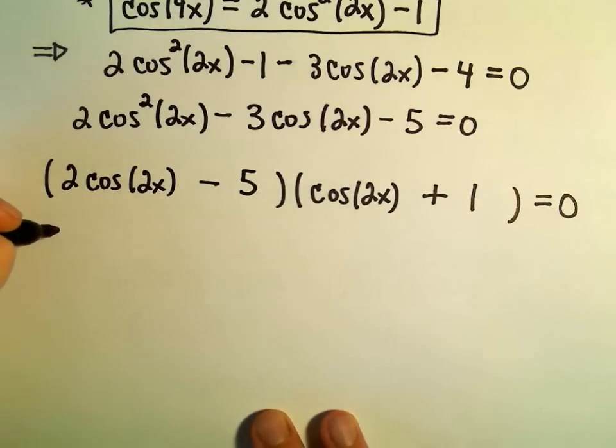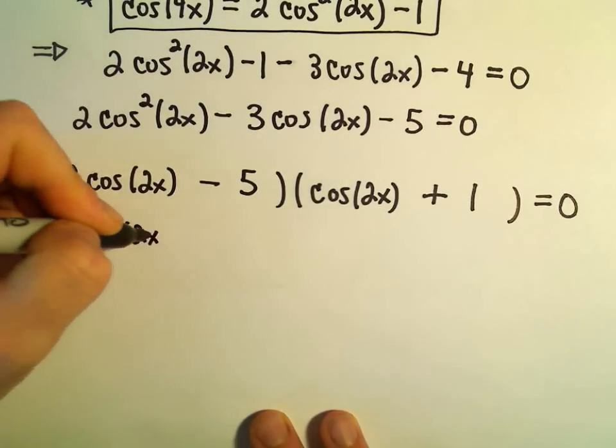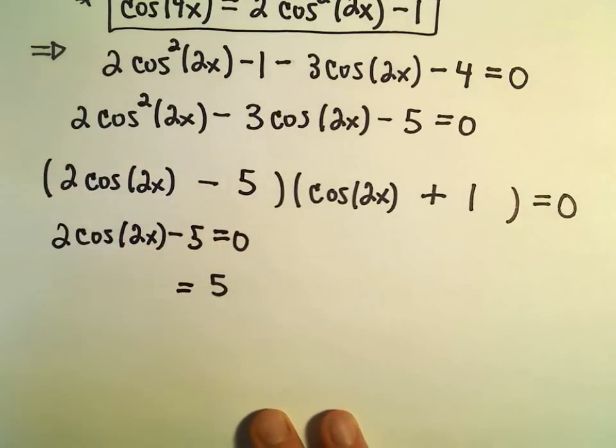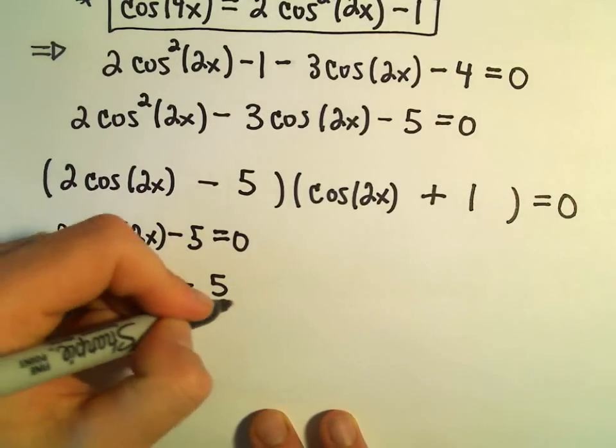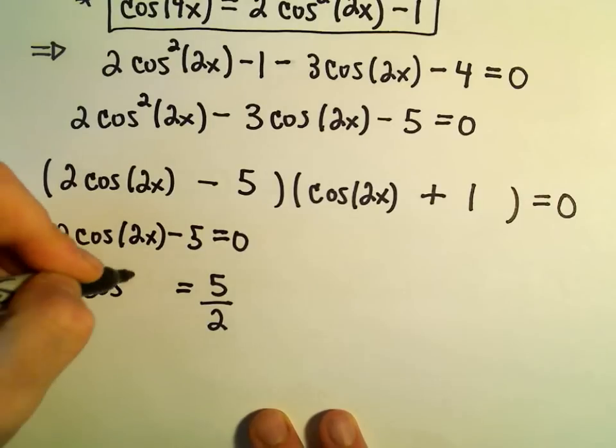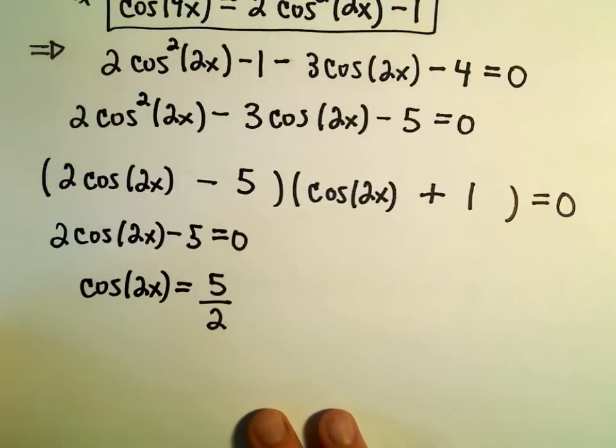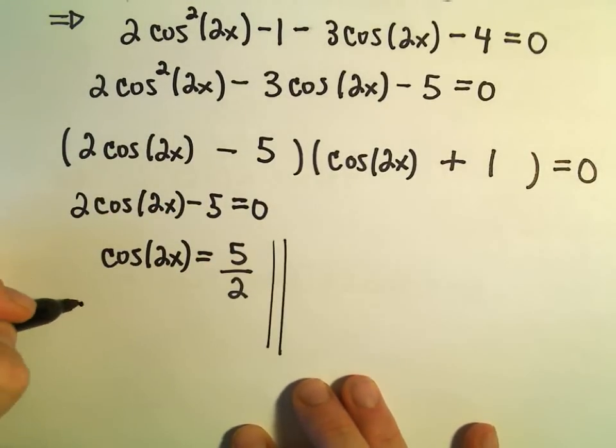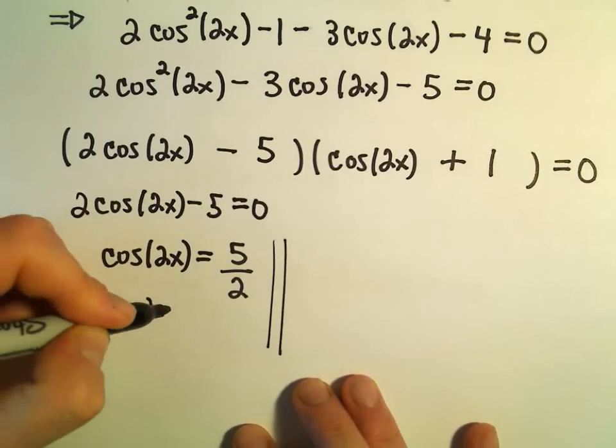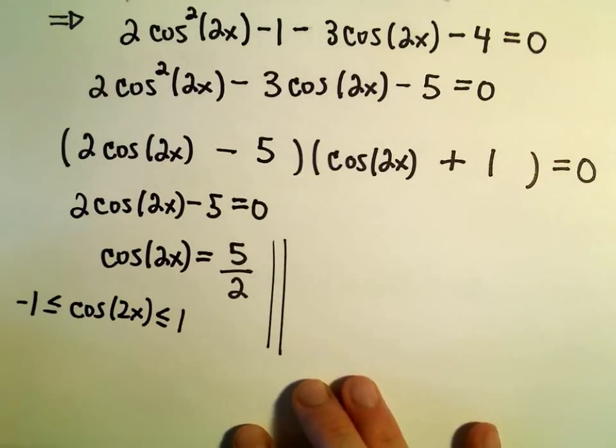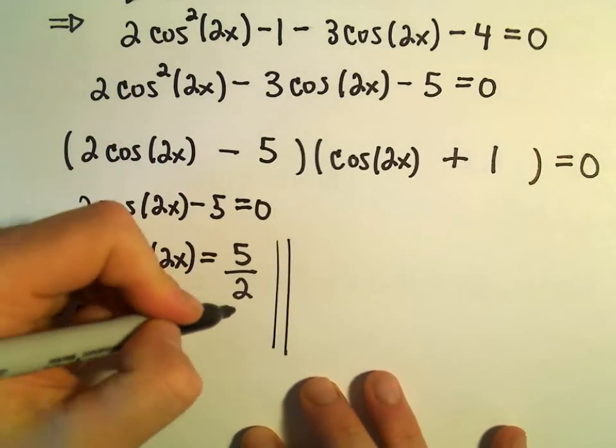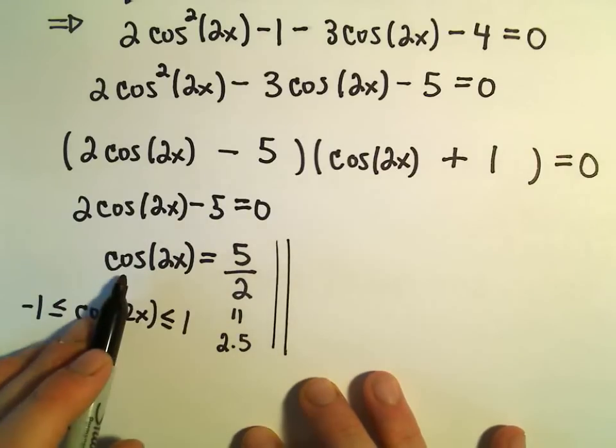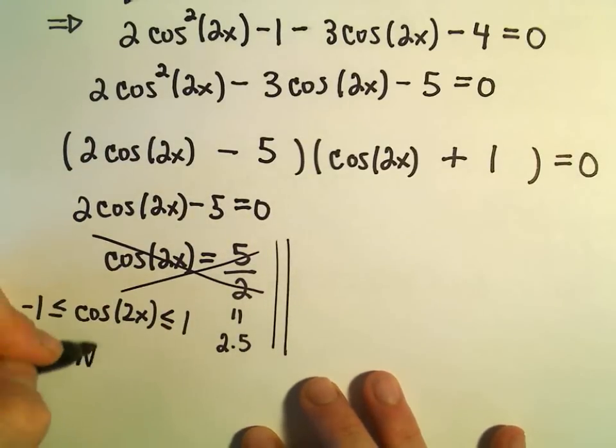What we're going to do now is take each factor and set it equal to 0. So 2 cosine of 2x minus 5 equals 0. Let's see. I'm going to add 5 to both sides. So that will move the 5 over. And then we can divide by 2. So we get cosine of 2x equals 5 over 2. Let's think about this equation for a second, though. So cosine of anything has to be between positive 1 and negative 1. That's the range of cosine. 5 halves equals 2.5. So 2.5 is outside of the range of cosine. And that simply says that this equation is going to have no solutions.